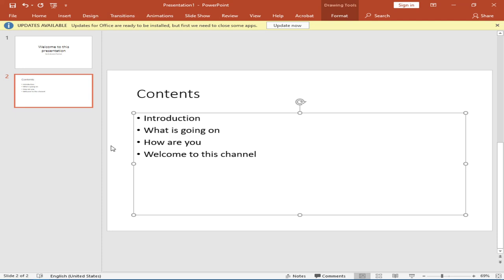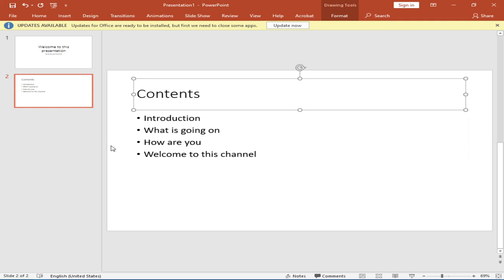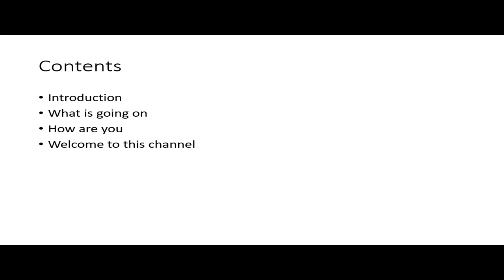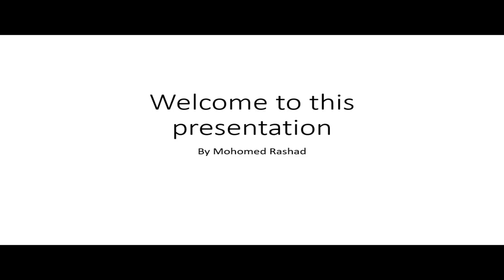The items typed in the object placeholder appear on the left side of the screen as bullet points. To start the slideshow from the current slide, press Shift+F5. The screen reader announces: 'slideshow slide two, contents — introduction bullet, what is going on bullet, how are you bullet, welcome to this channel.' To go back to slide one, press Backspace; to advance to slide two, press Enter, Spacebar, or left-click.